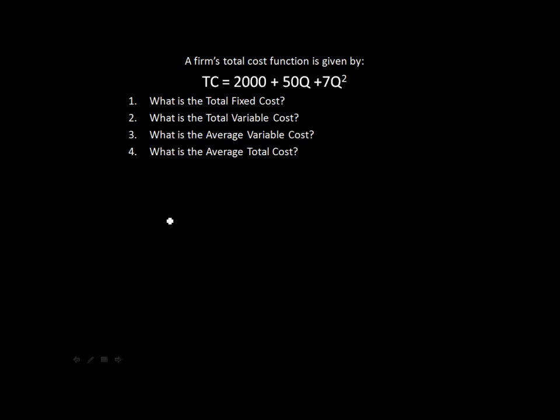The mathematics behind this question is quite simple, but like most things in economics, you need to know your definitions and where they fit into a bigger picture. In this question, a firm's total cost function is given by TC equals 2,000 plus 50q plus 7q squared, and then they give us four questions regarding the cost function.